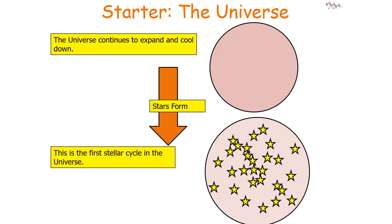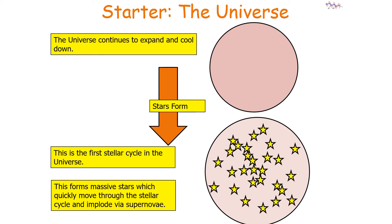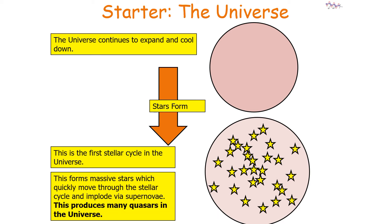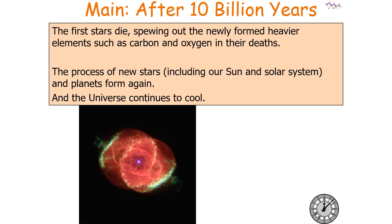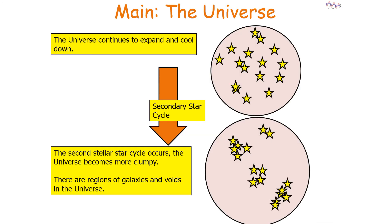We're now undergoing the first stellar cycle in the universe. This forms massive stars which quickly move through the stellar cycle and implode via supernovae, producing many quasars. After 10 billion years, the first stars die out and spew newly formed heavier elements such as carbon and oxygen in their death, and the process of new stars and planets continues. The second stellar cycle occurs and the universe becomes even more clumpy, with regions of galaxies and voids.